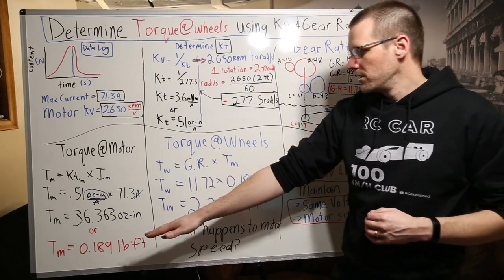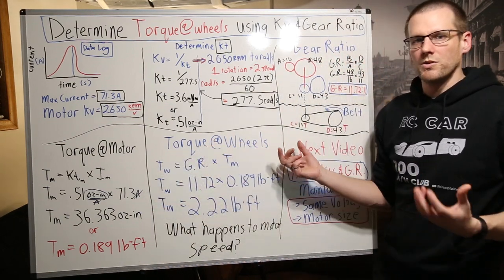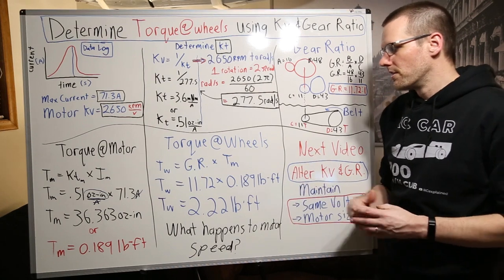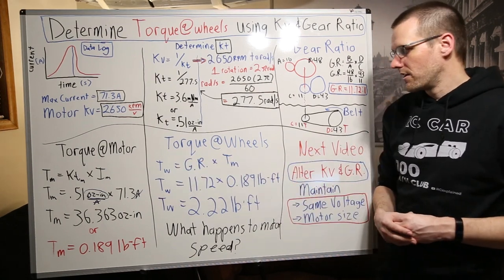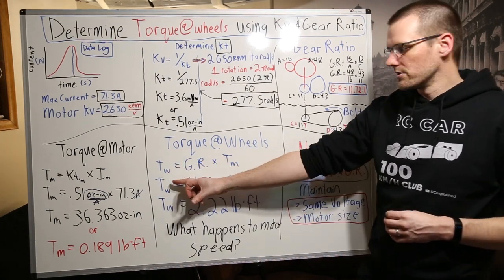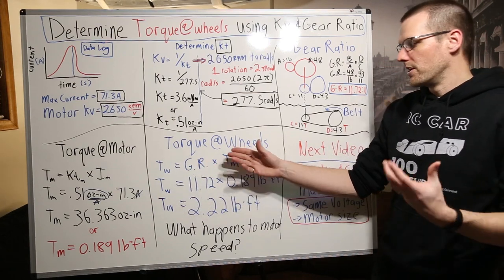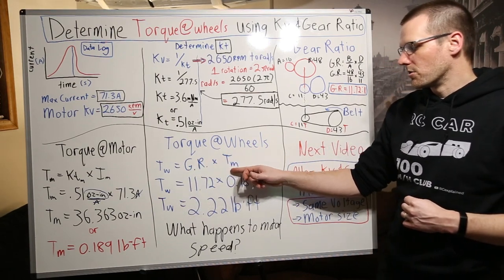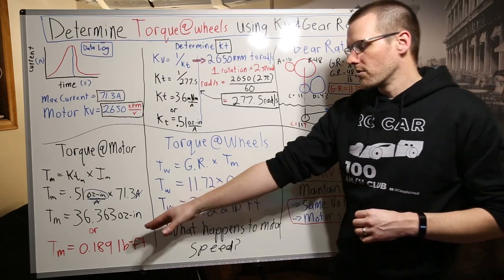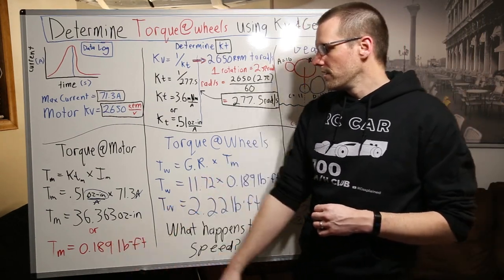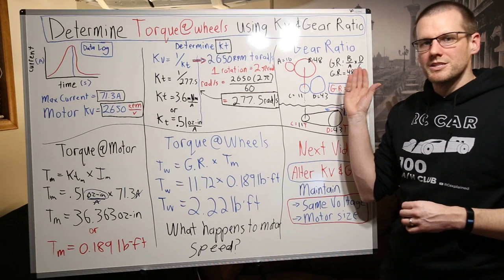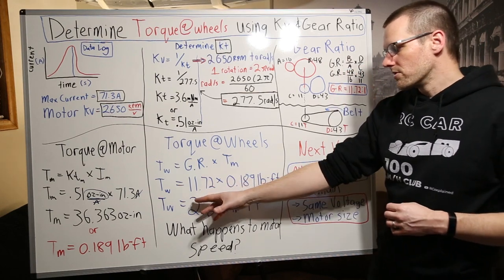So then we go ahead, the next step from here is to jump into the torque at the wheels. Well this again is quite simple. You only got three variables here where the torque at the wheels now is equal to our gear ratio of the radio control vehicle multiplied by the torque of the motor. We worked out the torque of the motor in step four and we did the gear ratio here in step three. We go ahead, plug those numbers in, 11.72, this is a gear ratio, it's unitless. It doesn't have units associated with it.